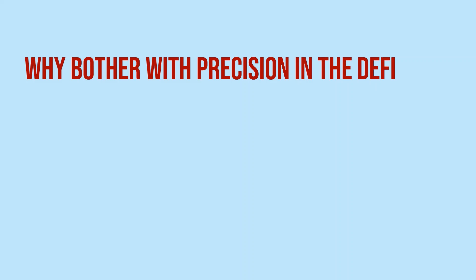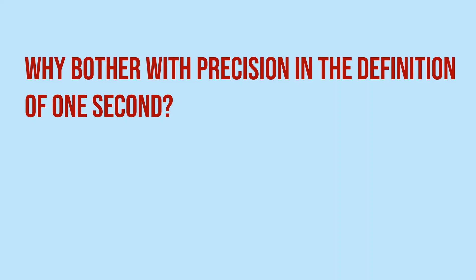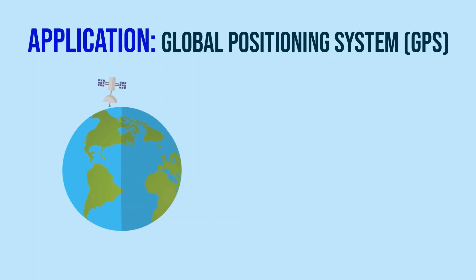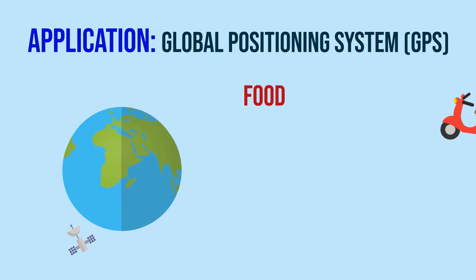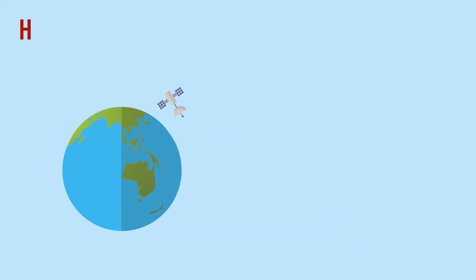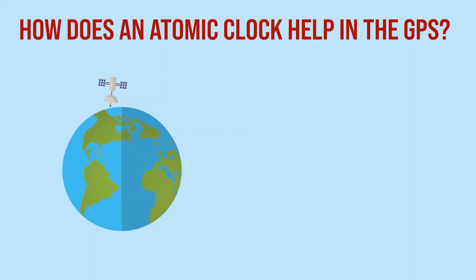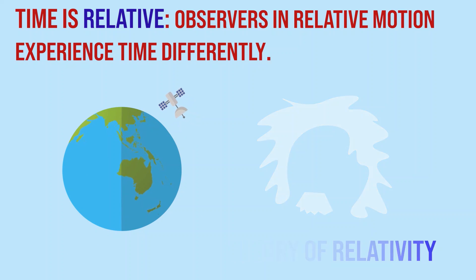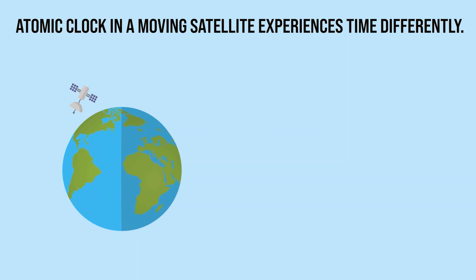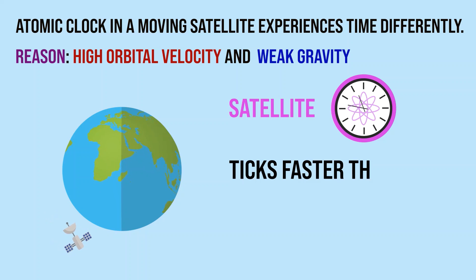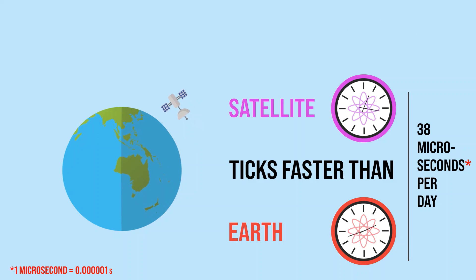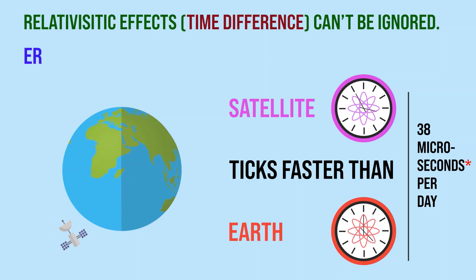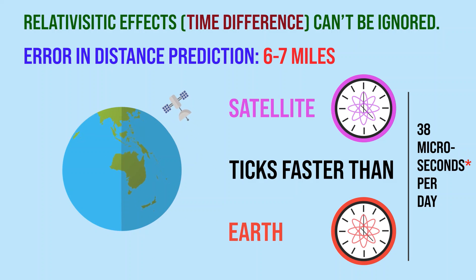But why is such mass precision needed to define one second? The most important application of atomic clocks is in the global positioning system, also known as GPS, which is crucial for almost everything in the modern world, from food deliveries to complex navigational systems. The answer lies in the nature of time, which, as shown by Einstein, is relative. An atomic clock in a moving satellite experiences time differently due to weak gravity and ticks faster than clocks on Earth. If engineers do not consider this relativistic effect, GPS devices would become useless in less than a day, as errors in timekeeping would result in distance predictions off by approximately 6 to 7 miles.